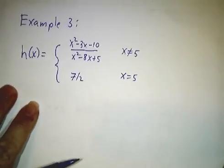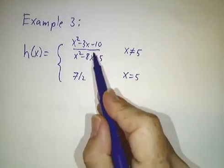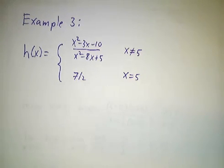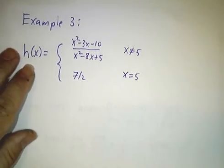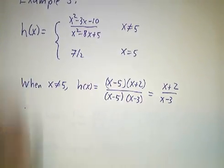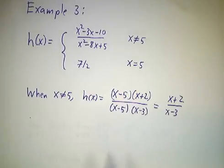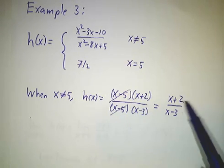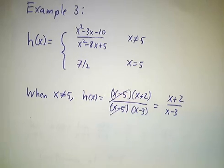The last example was this ratio that we looked at in the last video, except we've got a special definition for what happens when x equals 5. Now, when x is not 5, we can cancel the factors of x minus 5 from the numerator and the denominator, and we just get x plus 2 over x minus 3.